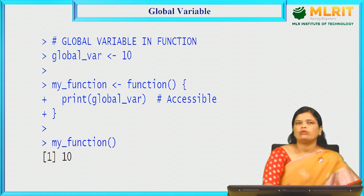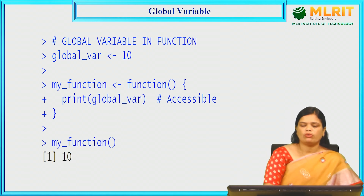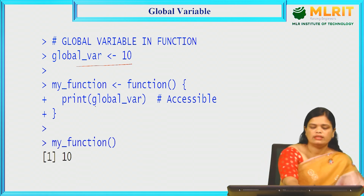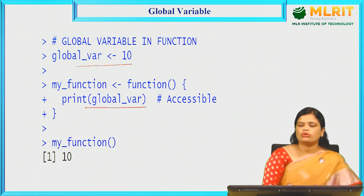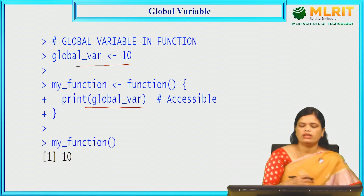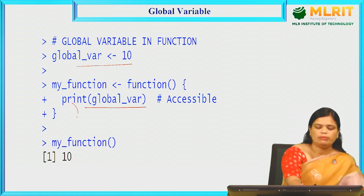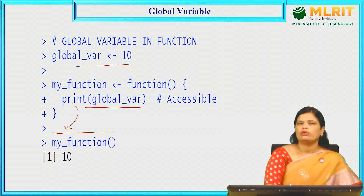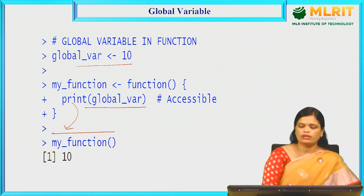Global variables and local variables — what are these? Once we declare a variable outside of a function, it is called a global variable. Here, we have assigned value 10 to a global variable and we are trying to access this global variable within a function. A global variable's scope will be throughout the program — whether you print it within the function, within the loop, or outside the loop, the value will be the same.